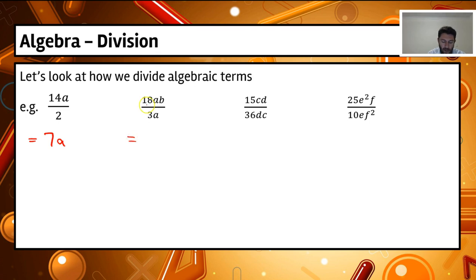In our second one, we've got 18ab divided by 3a. So do our numbers, do our numbers actually divide? Yes, 18 divided by 3 gives me 6.